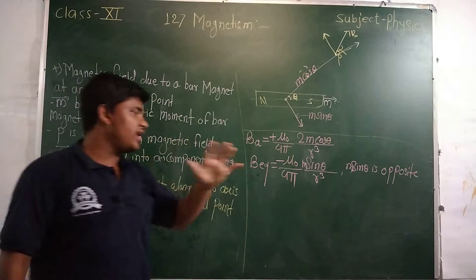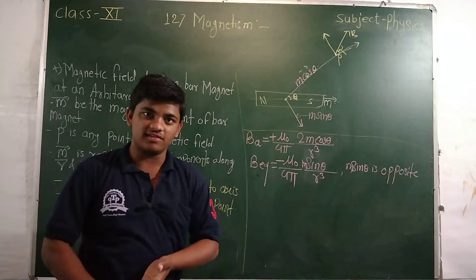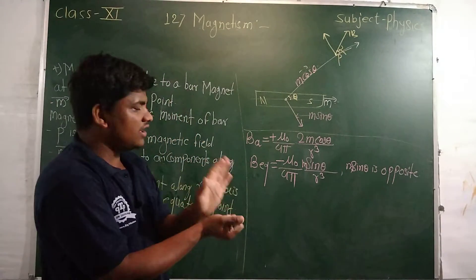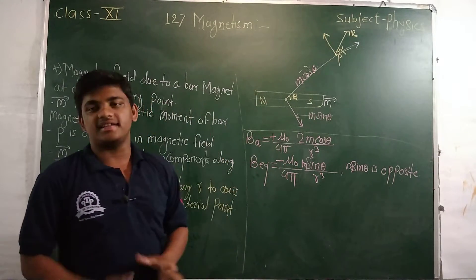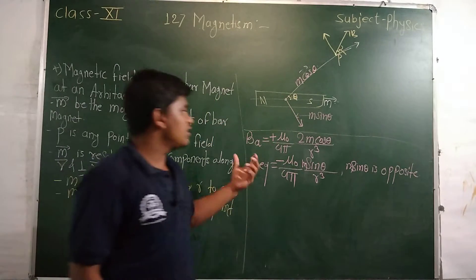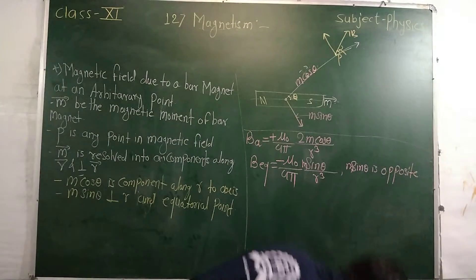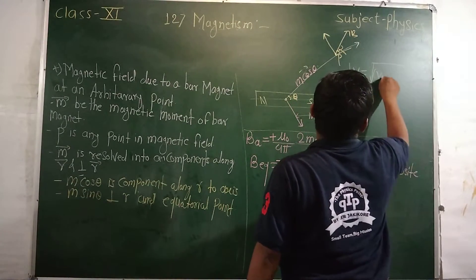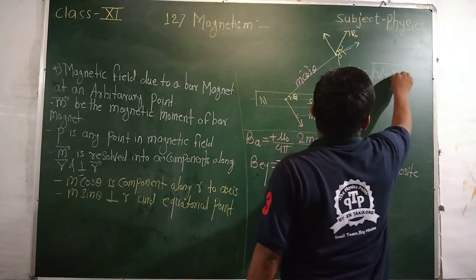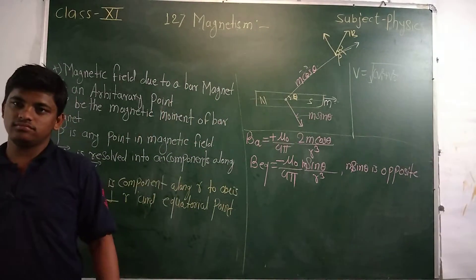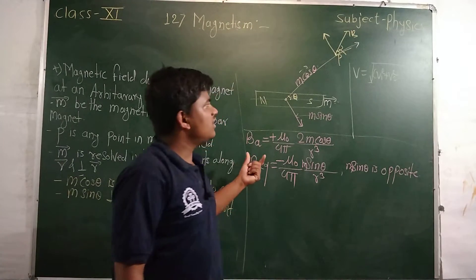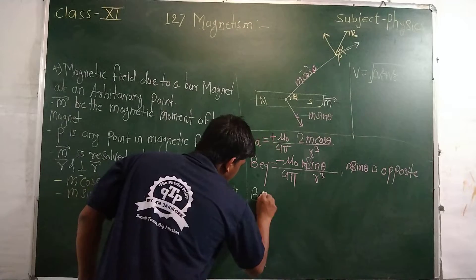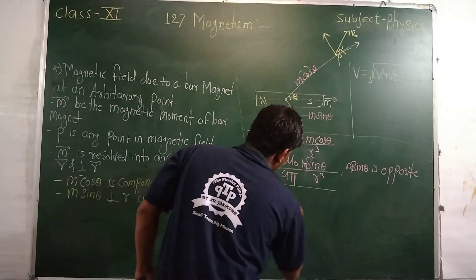When a point is placed on the axis the axial formula applies, and when placed on the equatorial the equatorial formula applies. But when the point is not on the axis or equatorial, we find the resultant. The resultant magnitude of the magnetic field B equals the square root of BA squared plus BE squared.